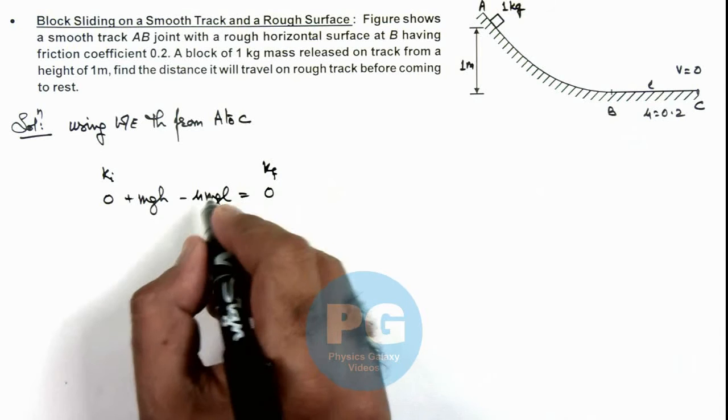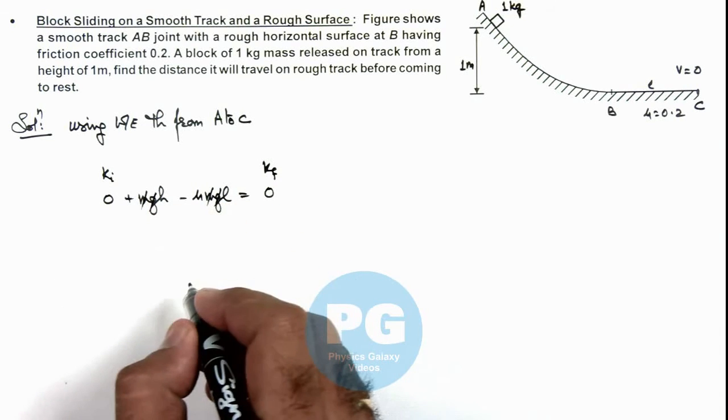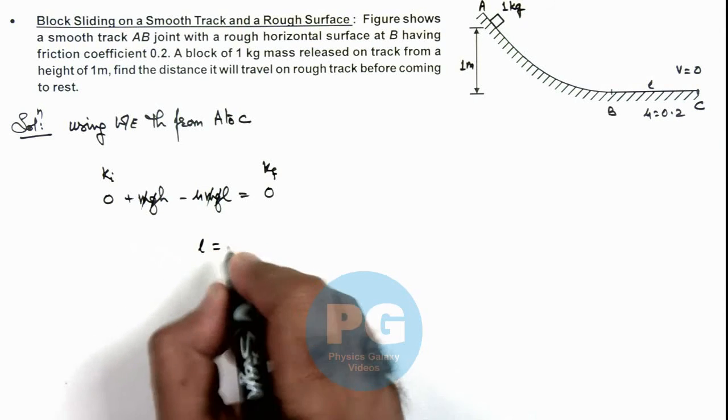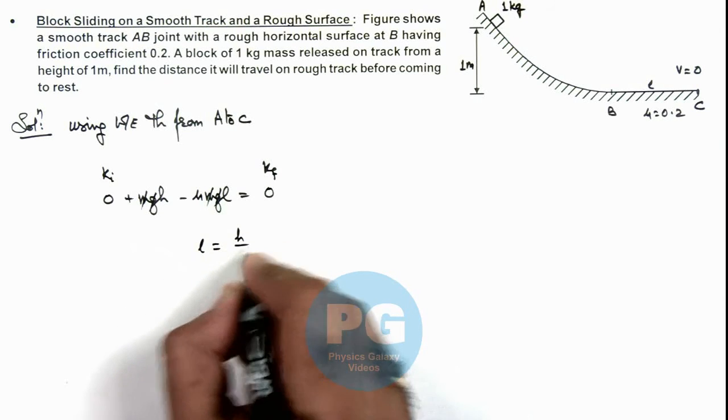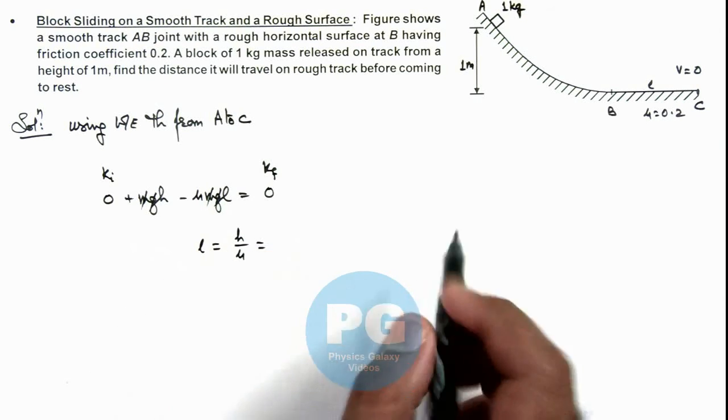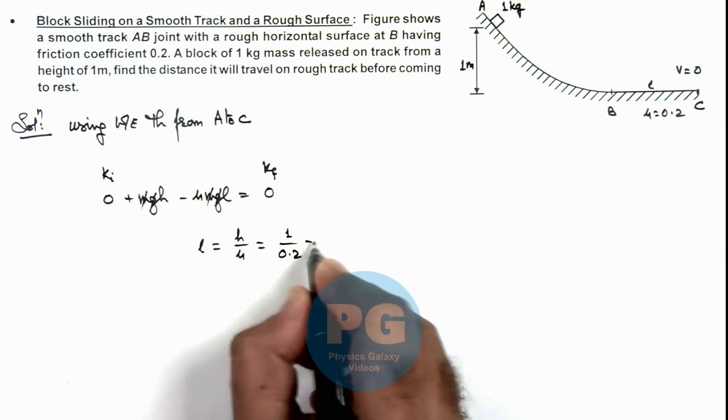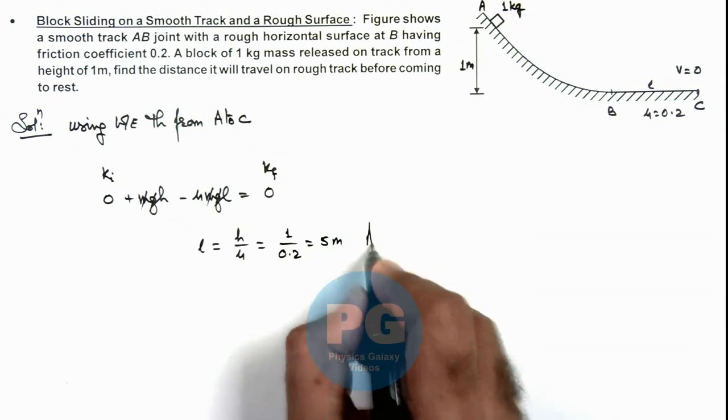So here m and g get cancelled out and we are getting the value of l is equal to h by mu. So here the value of h is 1 meter and the value of mu is 0.2, so this is 5 meters. That will be the result of this problem.